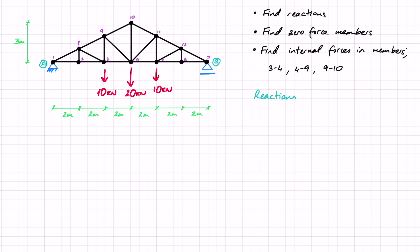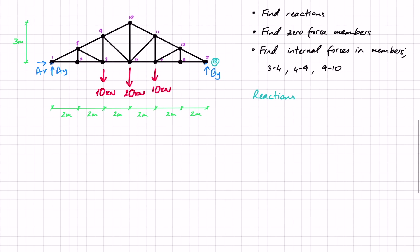Now we need to find the reactions by swapping out the supports for their reaction forces. At A, the pin support gives two reactions: AY and AX. At B, the roller support gives one reaction: BY. Starting with the sum of forces in X equals zero — I only have AX with no external forces in X — so AX equals zero.